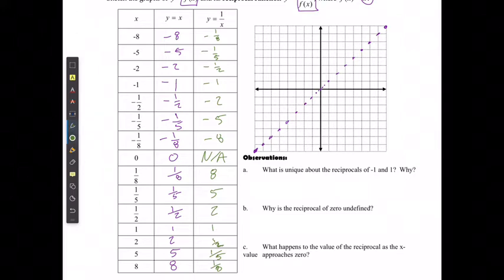And when I graph those points out, then I see that what I'm actually going to have is negative 1 over 8, then negative 1 over 5, then negative 1 over 2, 1, 2, 5, and 8.